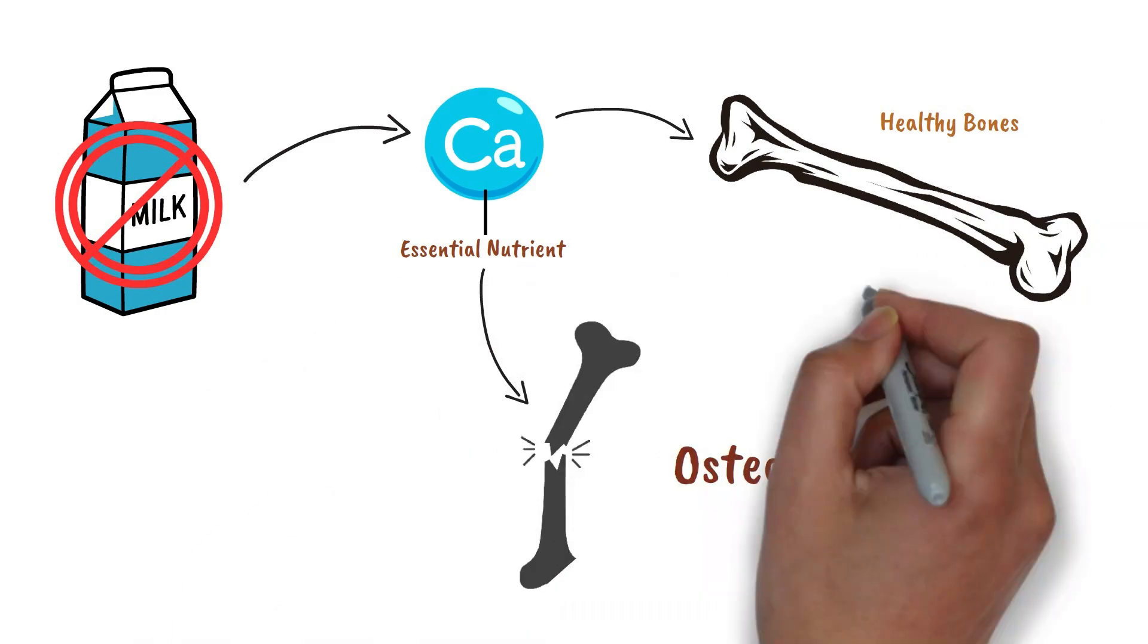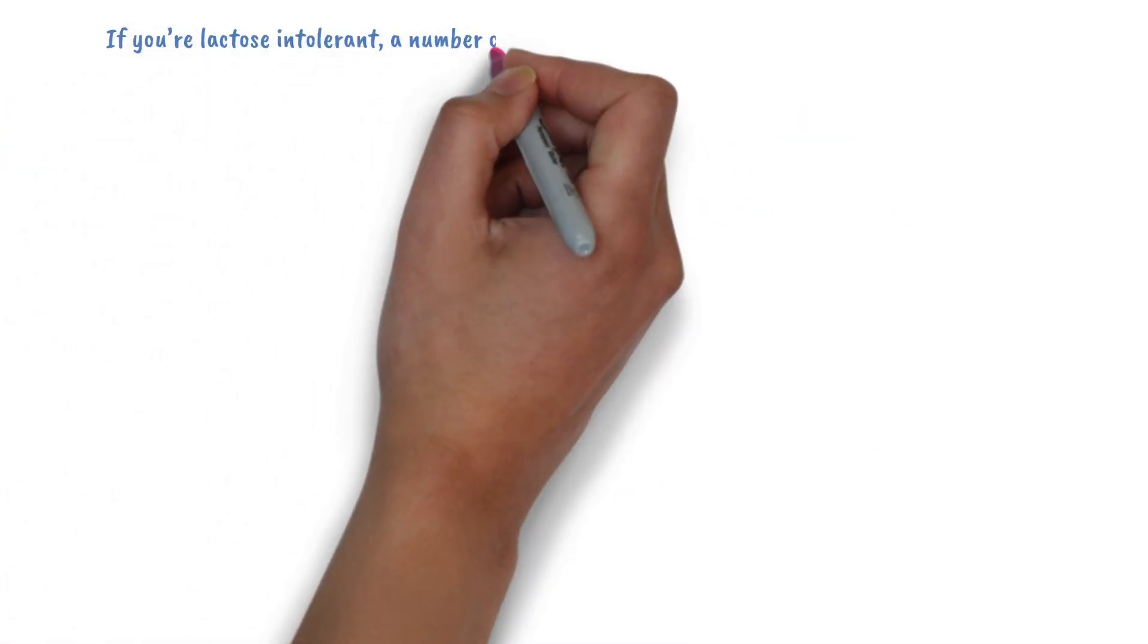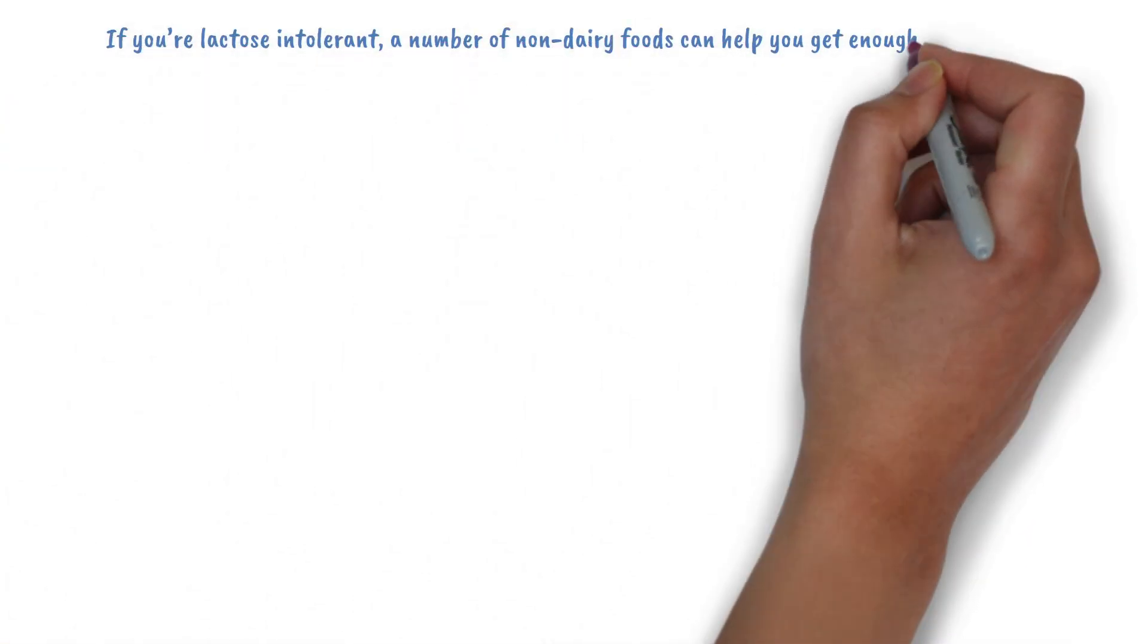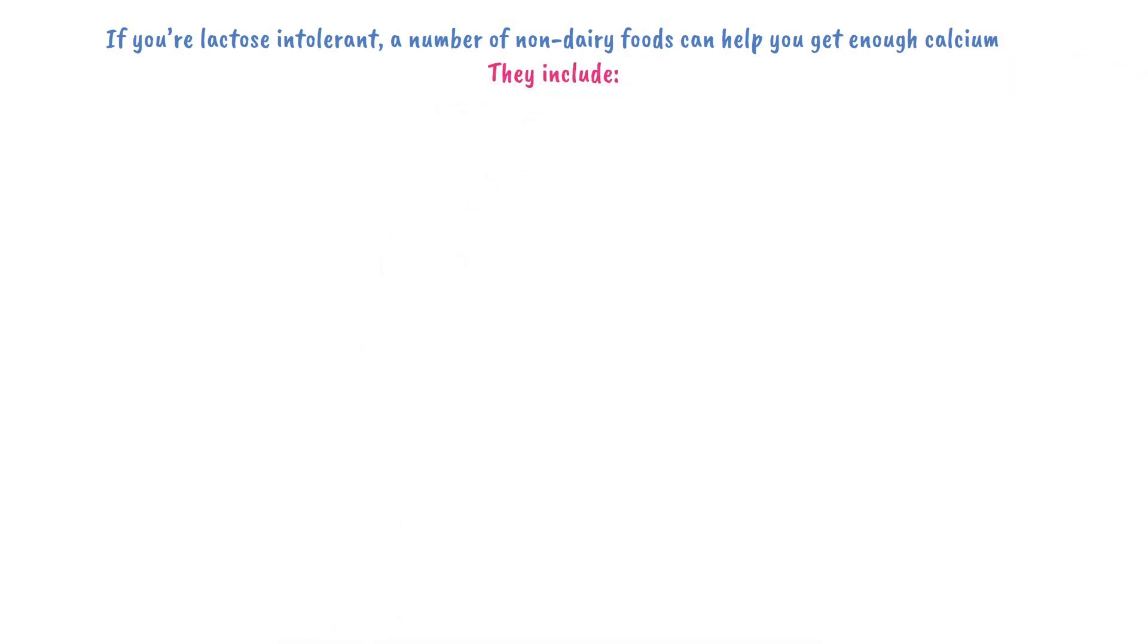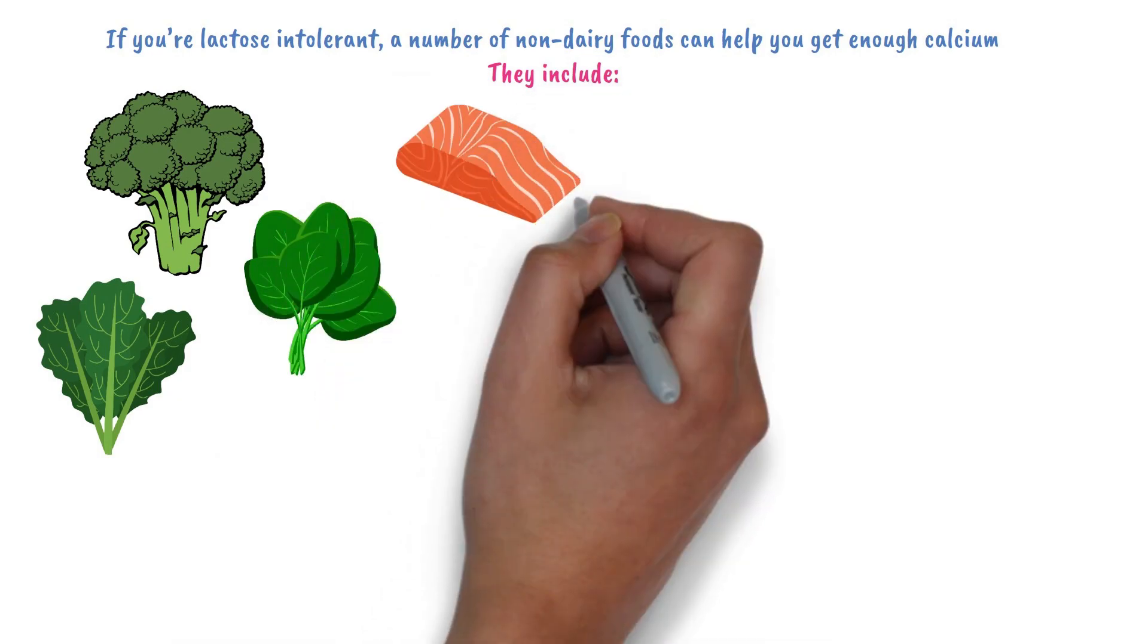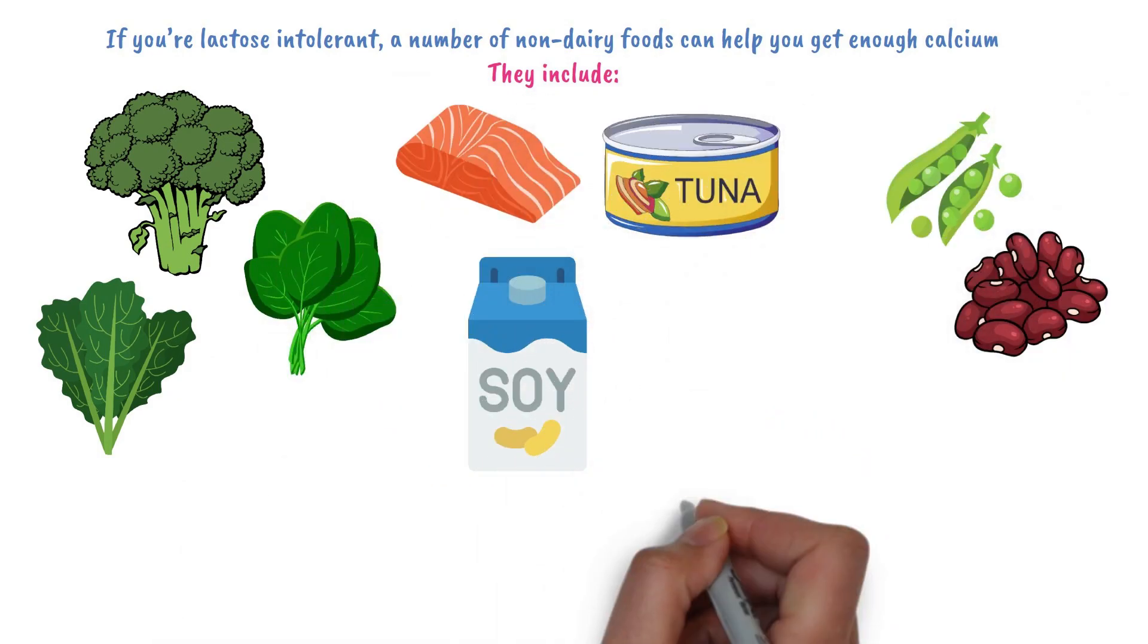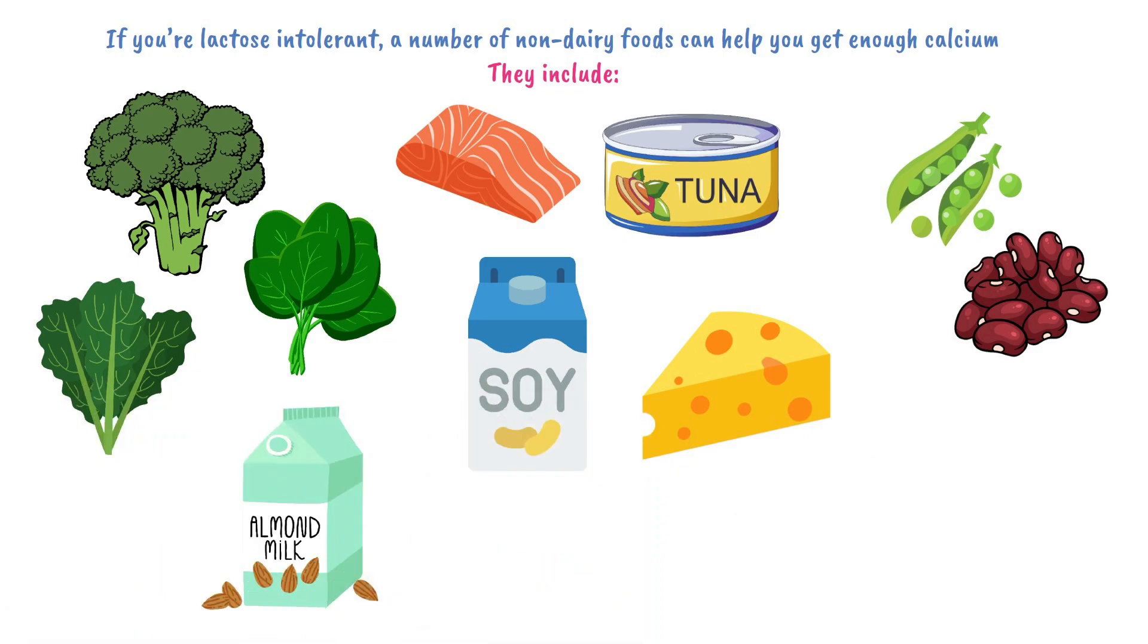If you are lactose intolerant, a number of non-dairy foods can help you get enough calcium. They include dark leafy greens and vegetables like broccoli, spinach, and kale, salmon, and tuna, beans and legumes, calcium-fortified soy milk and cheeses, almond milk, and oranges.